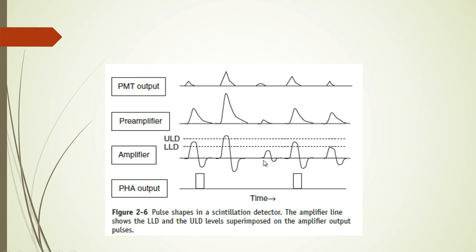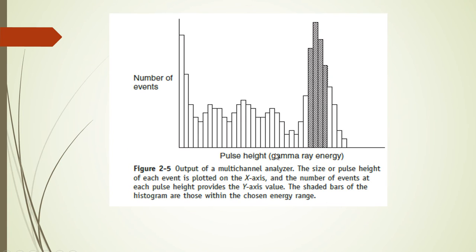An MCA could be considered to be consisting of a series of single channel analyzers which are observing the output from the amplifier within small ranges, like 0.1 to 0.2, 0.2 to 0.3. They are all observing the output and registering the events.